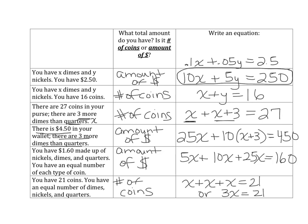The next two say you have an equal number of nickels, dimes, and quarters. For the first one, since the total is in the amount of money, you multiply your variable by 5, by 10, and by 25: 5x plus 10x plus 25x equals 160, or 40x equals 160. With decimals it would be 0.05x plus 0.1x plus 0.25x equals 1.6. For the last one, since the total is in the number of coins, you just write x plus x plus x equals 21, or 3x equals 21. This will help you understand how to set up coin problems.